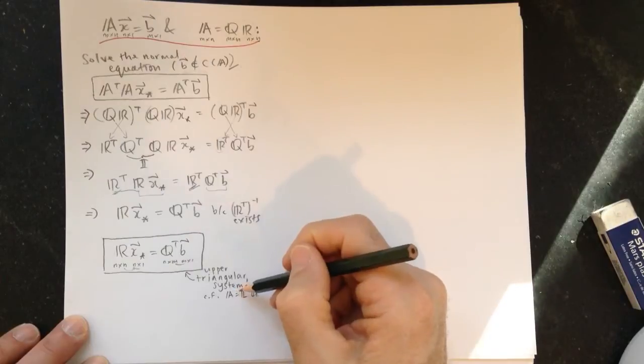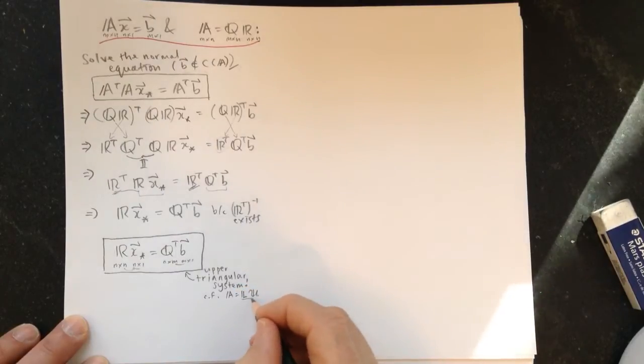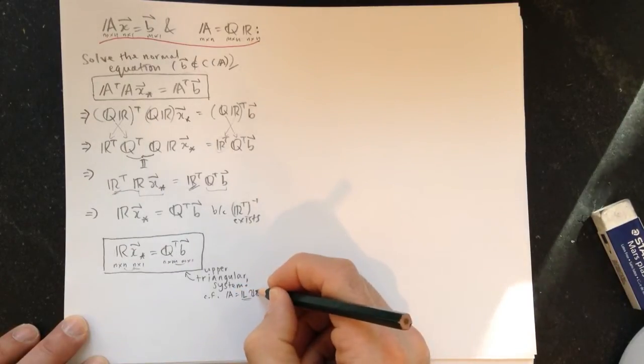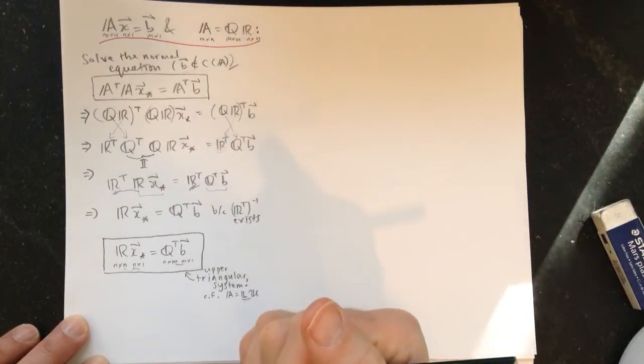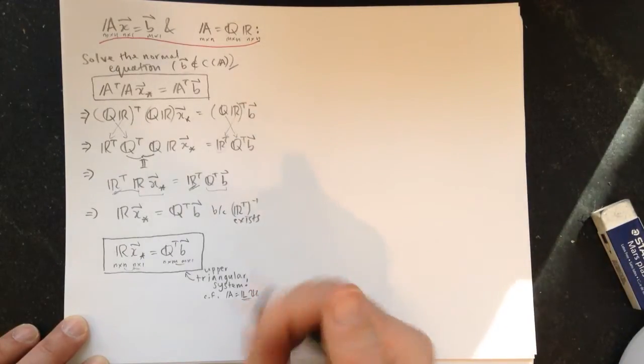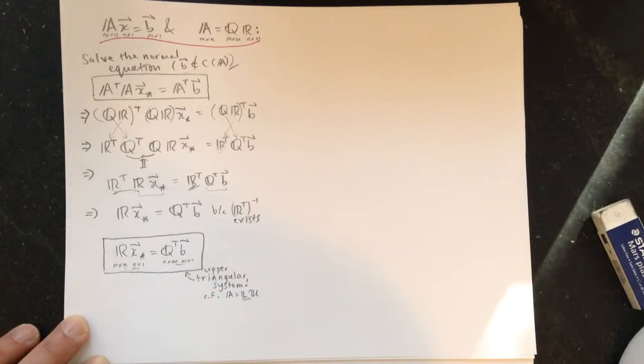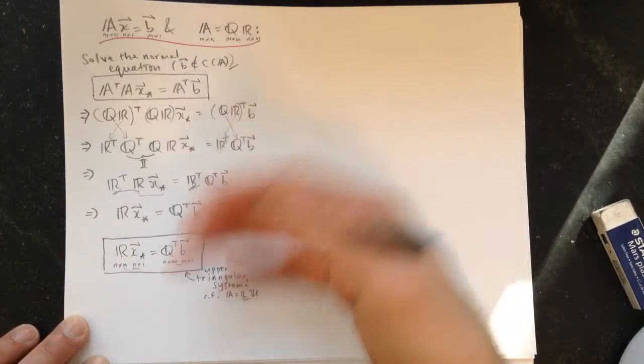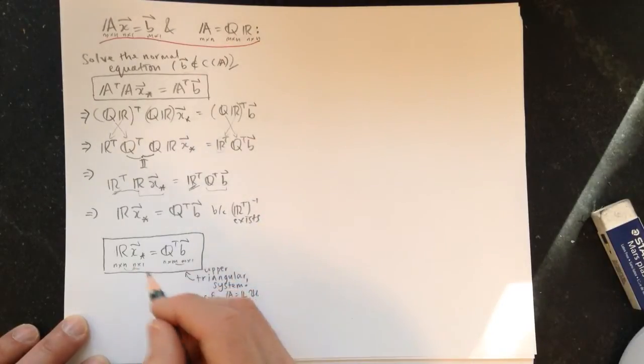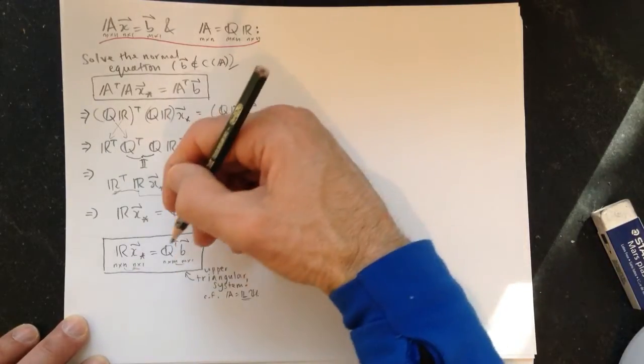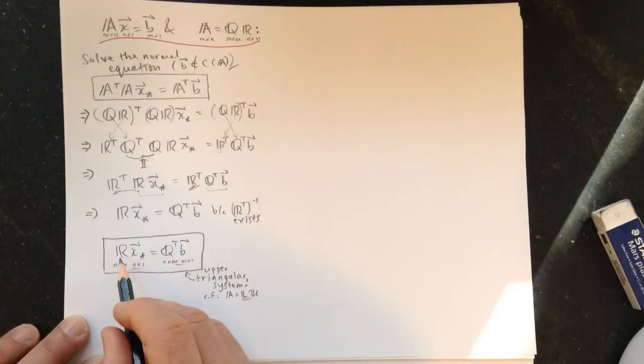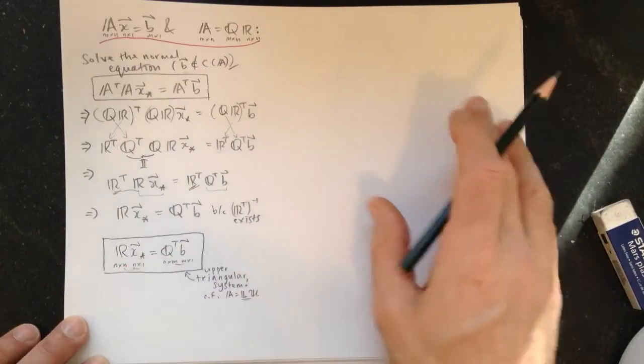And we can compare it with A equals LU. So A equals LU, we solved that. We had an upper triangular system. We solved that, and then we solved the lower triangular system. Alright. But this is even better because we just have one upper triangular thing to solve. This is easy. So once we have QR, we can always just, someone gives you a B. All you have to do is multiply Q transpose times B, and then solve an upper triangular system through back substitution. Okay? Alright.